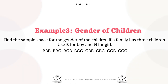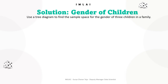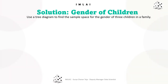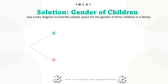If any family has three children, what's the sample space? That's what the question asks. Let's use a tree diagram to find the sample space for the gender of three children in a family. Let's begin.